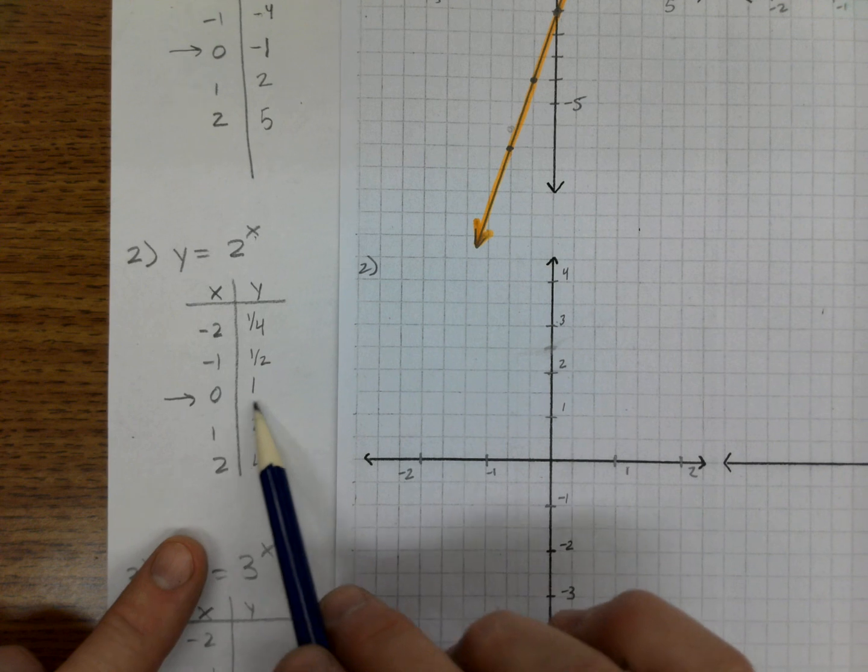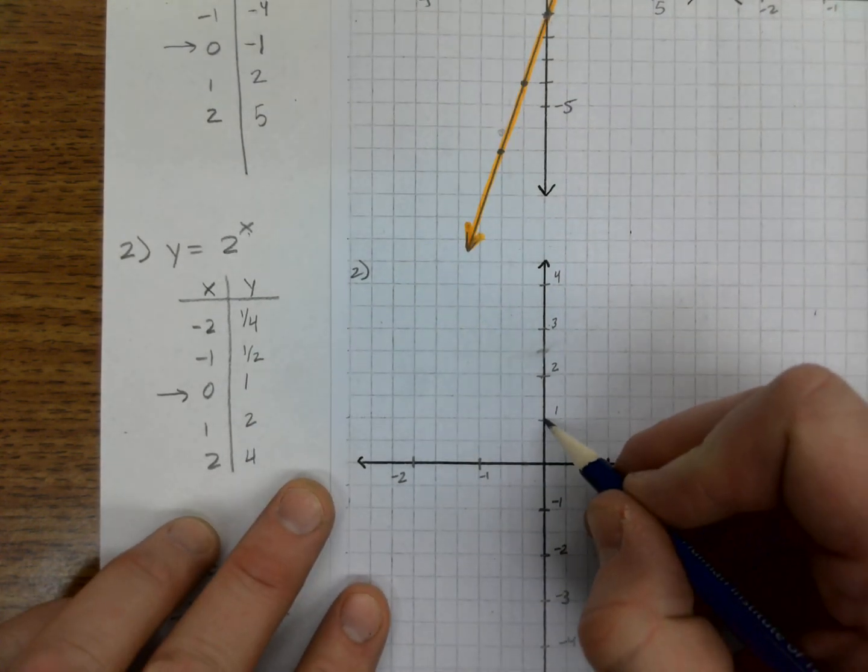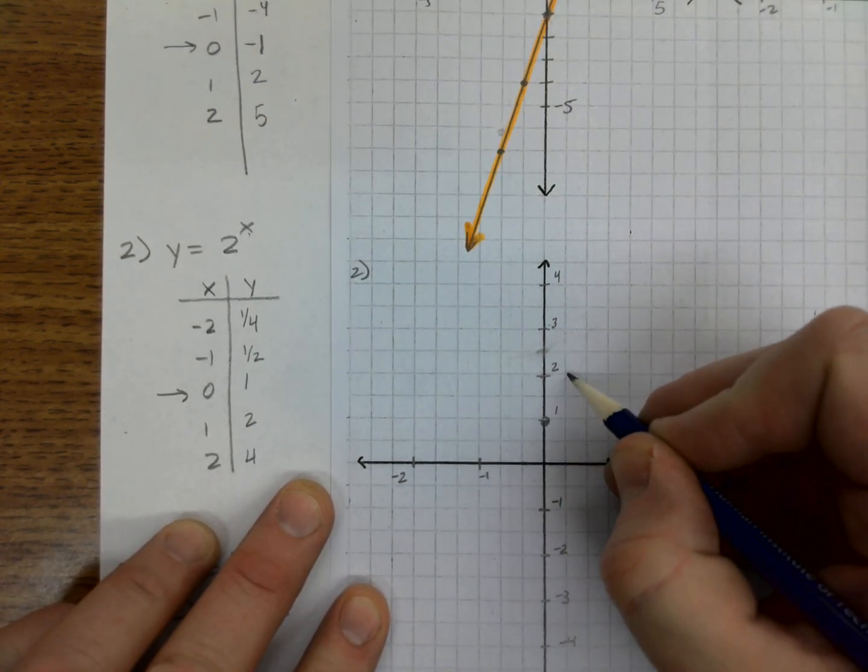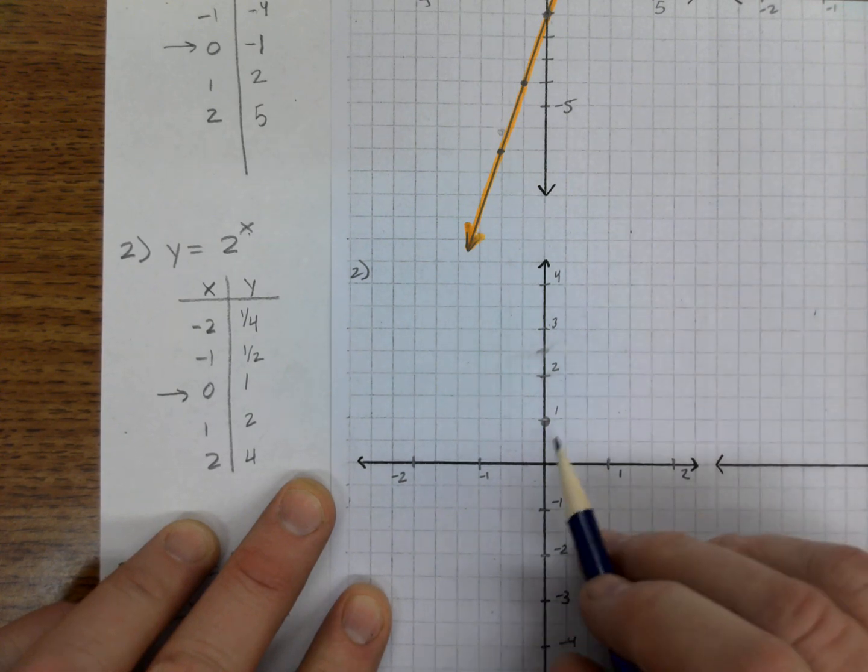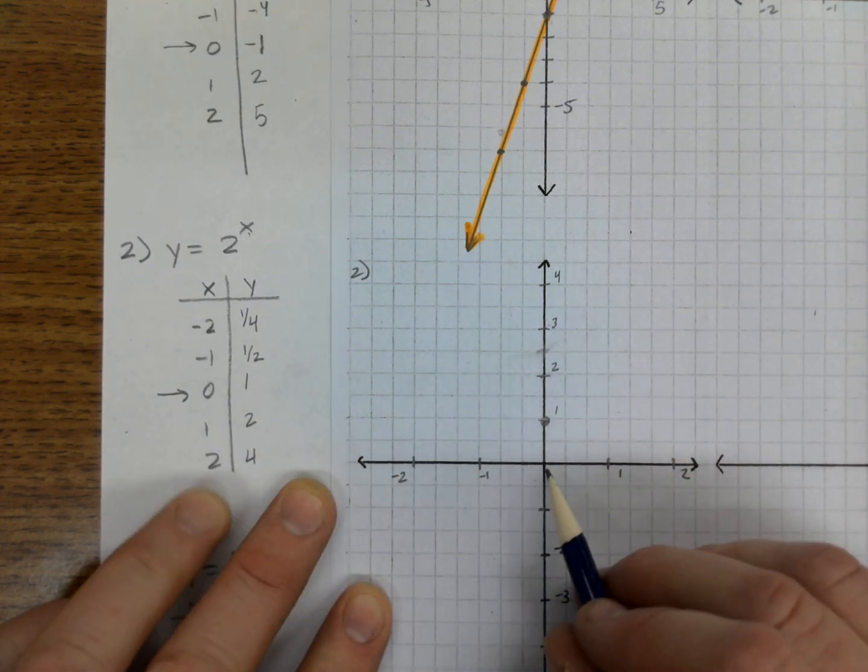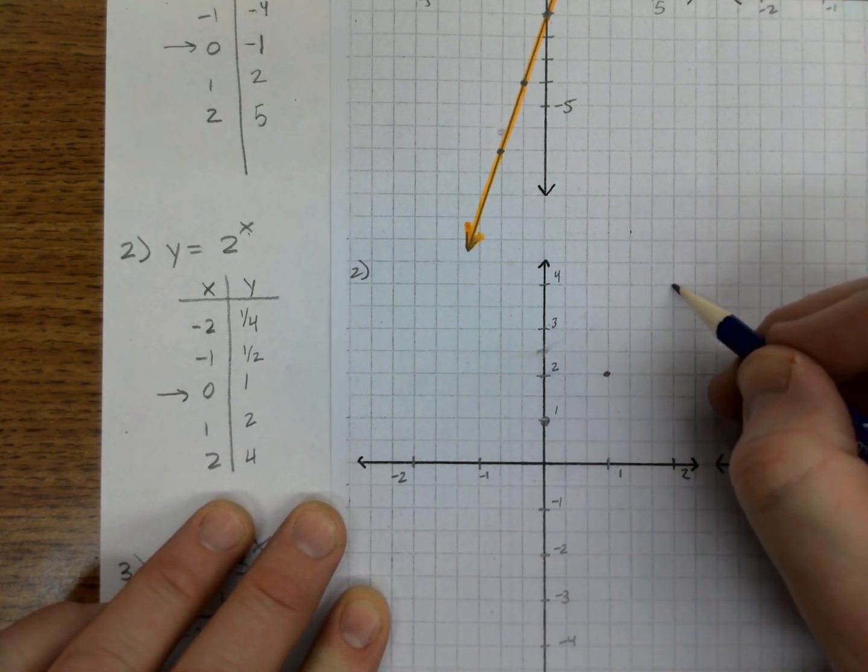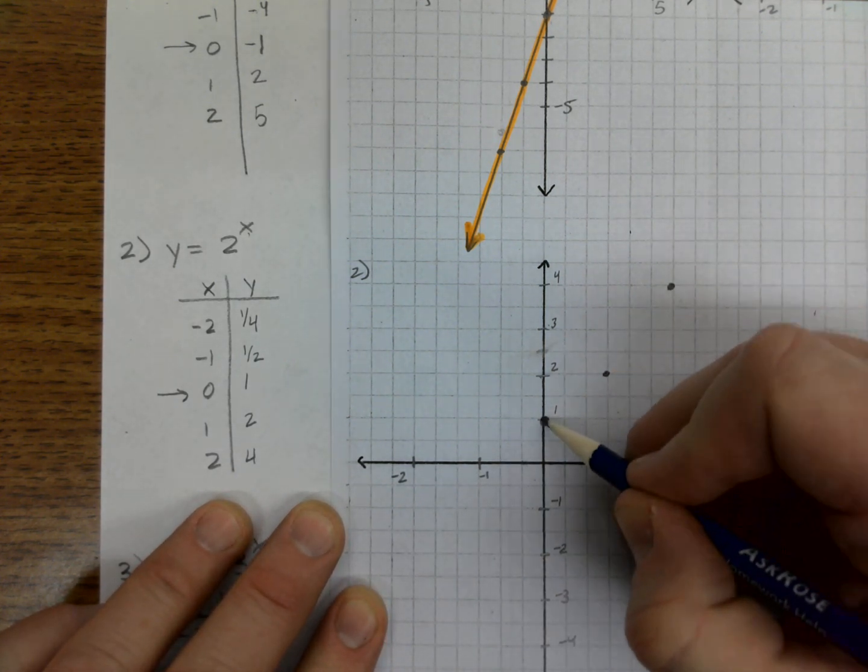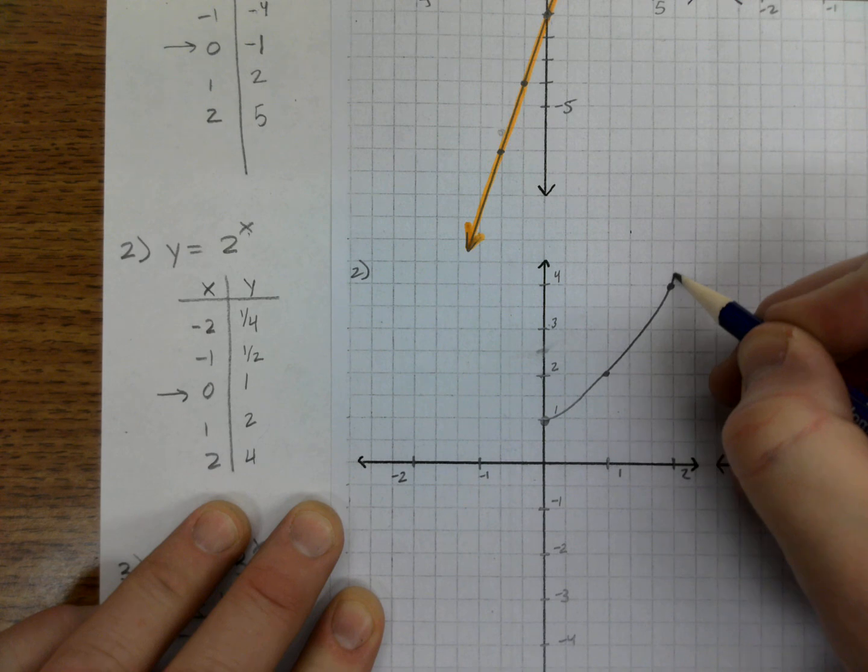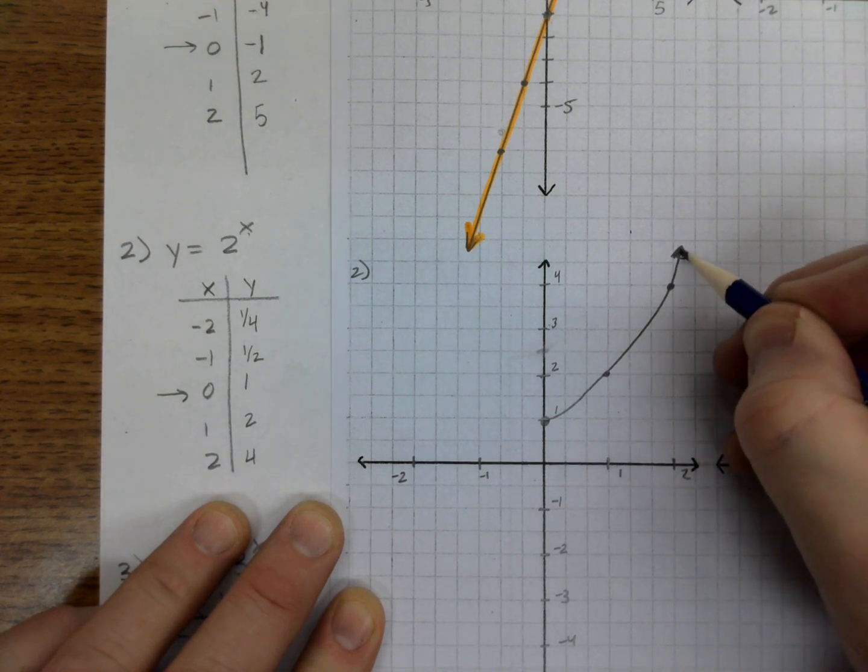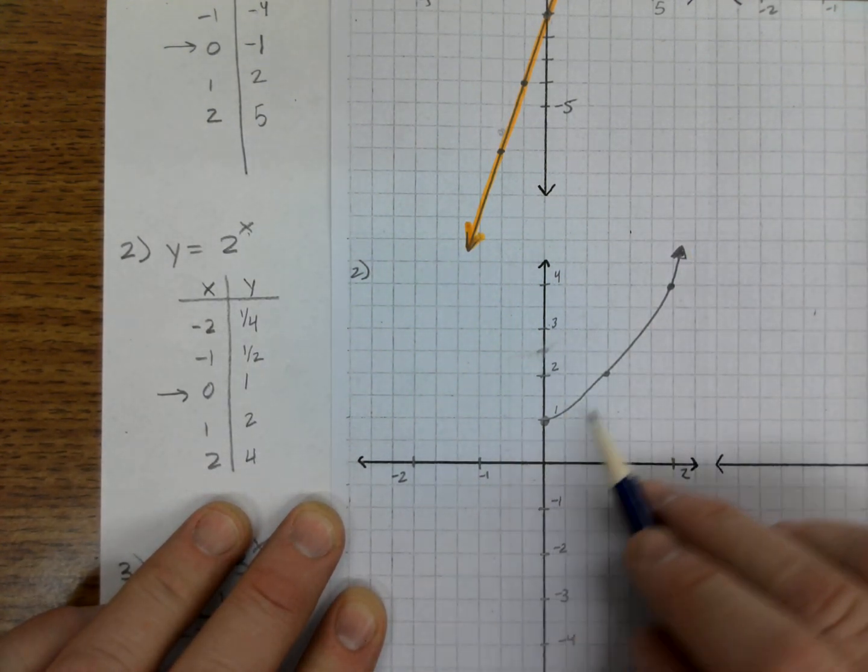Now we're going to plot those sets of points. Let's go ahead and start with these ones here. They're going to be the easiest. 0, 1 is here. And then over to 1 up to 2 here. Over to 2 up to 4 is here. And if you notice, these are going up, but they're in a curve. So you want to make sure you have a curved line here. It's like a letter U. It goes up.